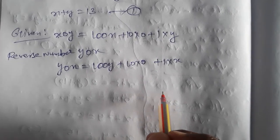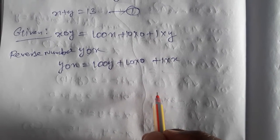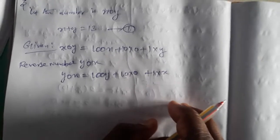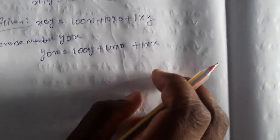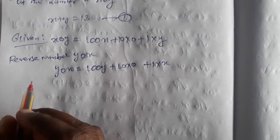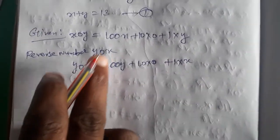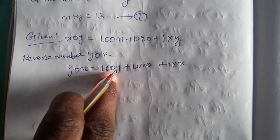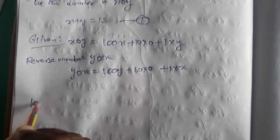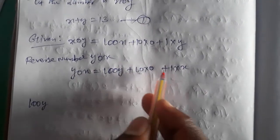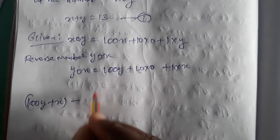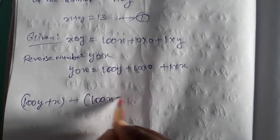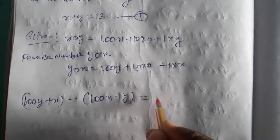Now, the given condition: the number so formed exceeds the original number by 495. So the reversed number minus the original number equals 495. That is: (100y + x) minus (100x + y) equals 495.